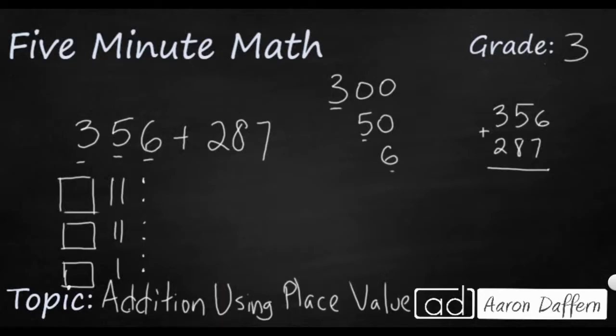Now let's look at this other number, 287. So we're going to do the same things. There's a hundreds flat, and there's a hundreds flat. I've got two hundreds flats. Now I've got eight tens flats. One, two, three, four, five, six, seven, eight tens flats.